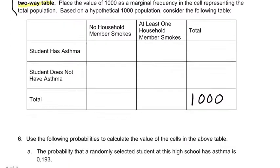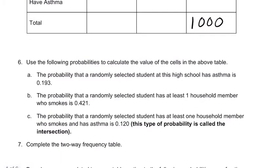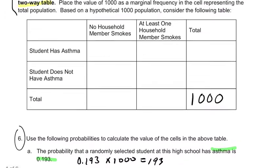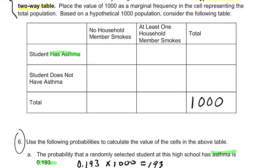Now you can go back and fill in information, and these prompts take us through it. The first one says the probability that a randomly selected high school student has asthma is 0.193. We're dealing with 1,000 students, so you do 0.193 times 1,000, which gives you 193 students with asthma. Students with asthma is our first row, and the total of 193 goes in that spot.